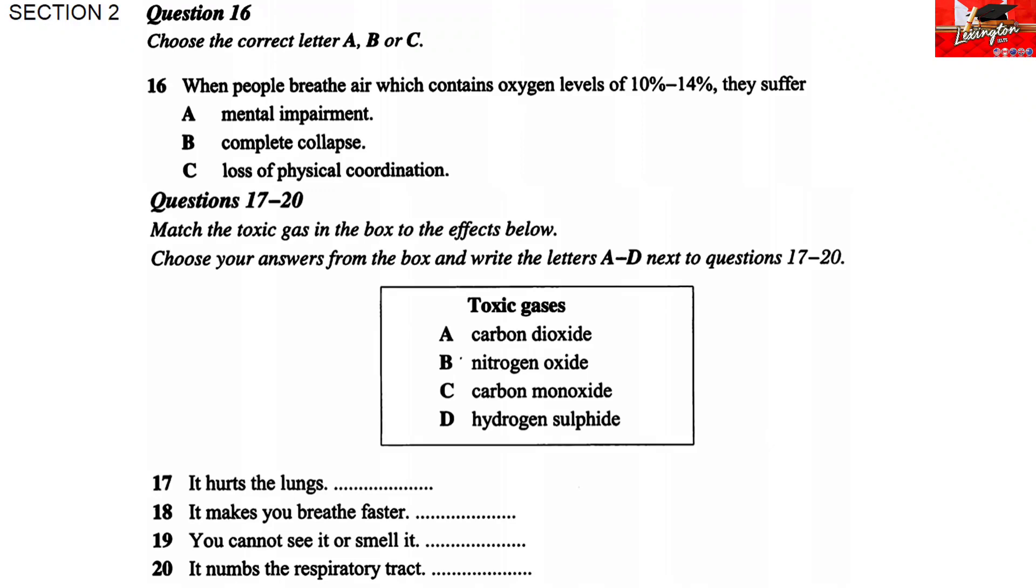Before you hear the rest of the talk, you have some time to look at questions 16 to 20. Now let's move on to fire safety. Before I talk to you about safety precautions and procedures, I'd like to mention some of the effects of smoke and heat on humans. There are four ingredients of fire, namely oxygen, fuel, heat and chain reactions. Almost all materials burn, and most household goods burn very easily. The air we breathe contains about 21% oxygen.